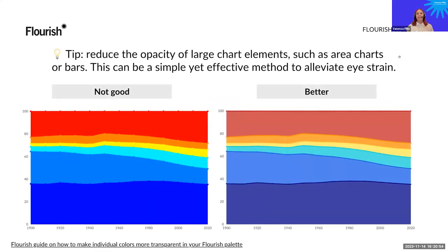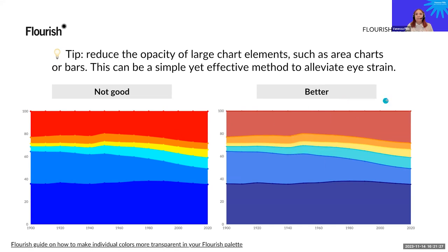In addition to adjusting saturation and brightness, we also recommend reducing the opacity of large chart elements such as area charts or bar charts — this is another simple but effective method to alleviate eye strain. On the left, an area chart uses very vivid, bright colors at full opacity, which is very hard on the eye. On the right, the improved version uses subdued colors plus reduced opacity, which is much better. Flourish has an easy guide and blog post on how to make individual colors more transparent in your color palette.